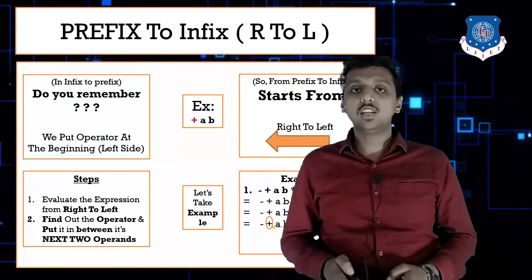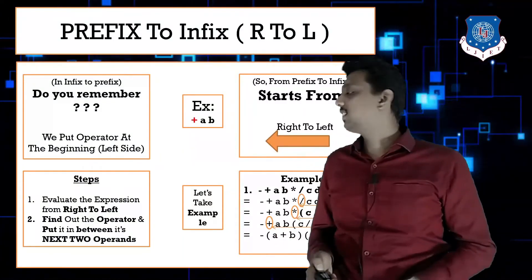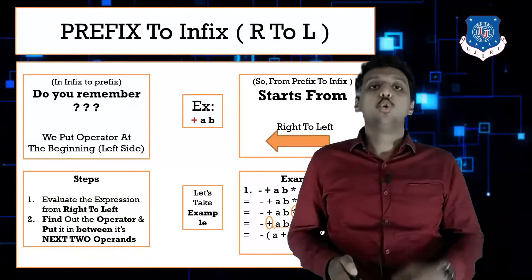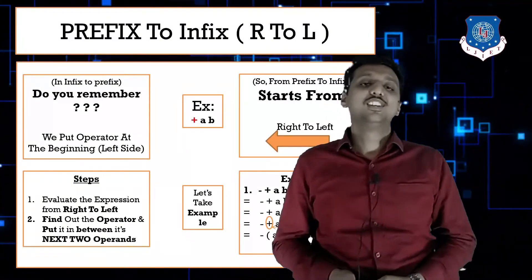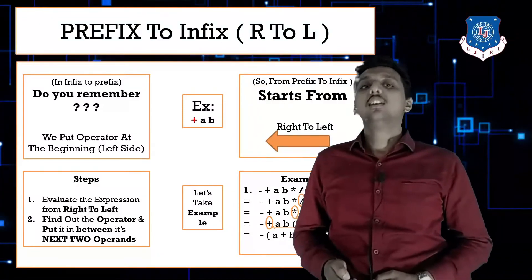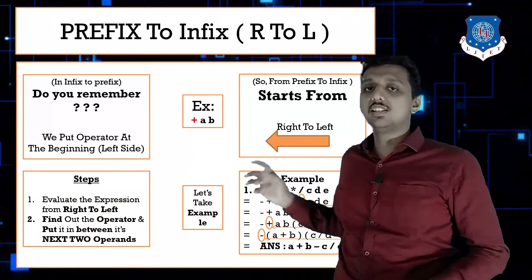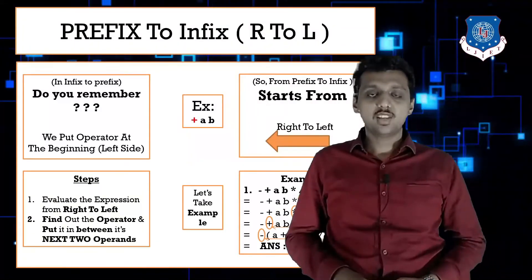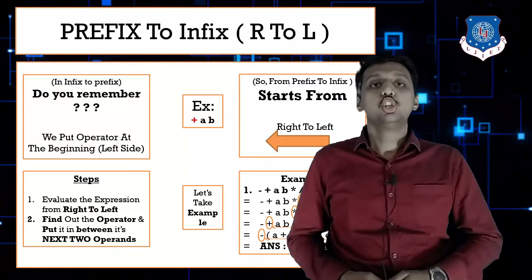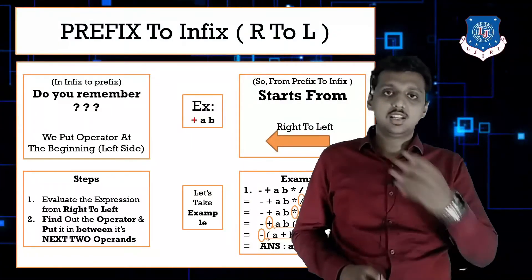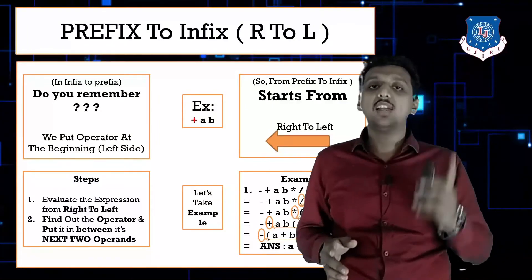Only one operator remains: minus. The answer is (a+b) - (c/d)*e. Remember: in prefix we go from right to left, while in postfix we go from left to right.